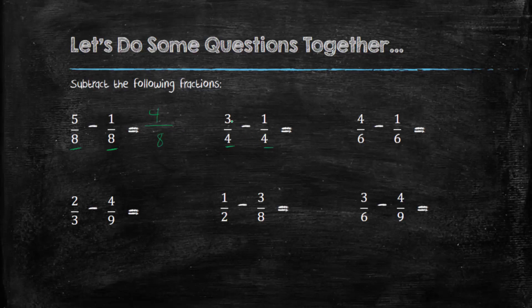Denominator is the same? Okay. Then we just subtract the numerators. 3 minus 1 is 2. And we always leave the denominator the same. Denominator is the same? Yes. So we just subtract the numerators. 4 minus 1 is 3 over 6.